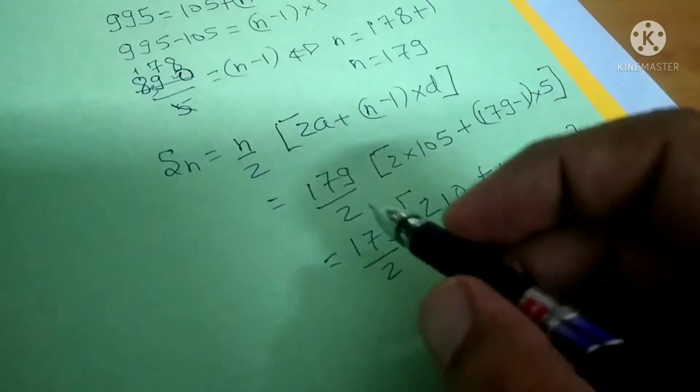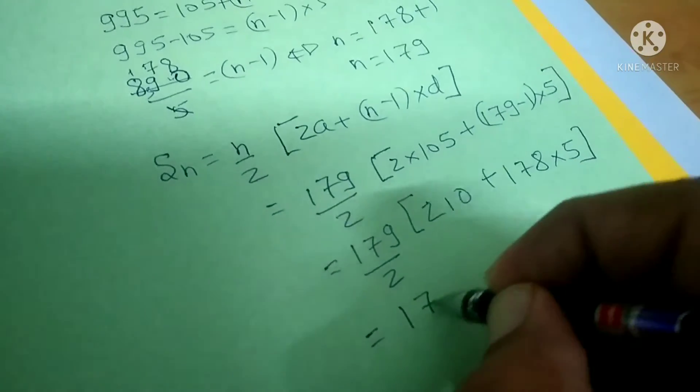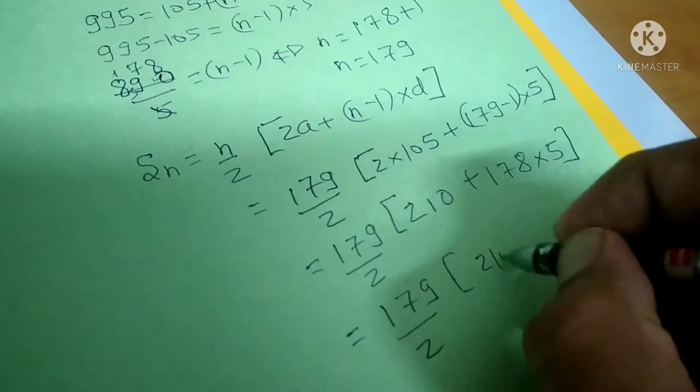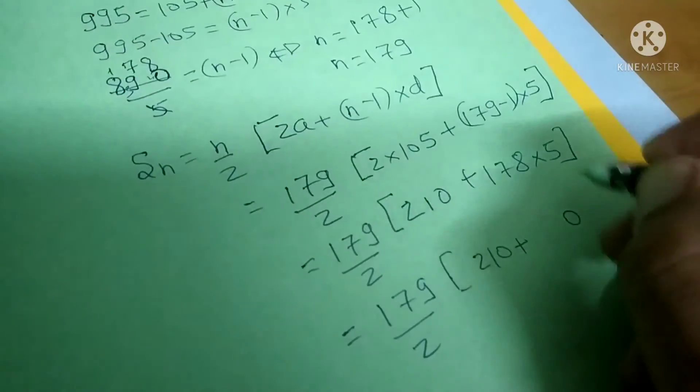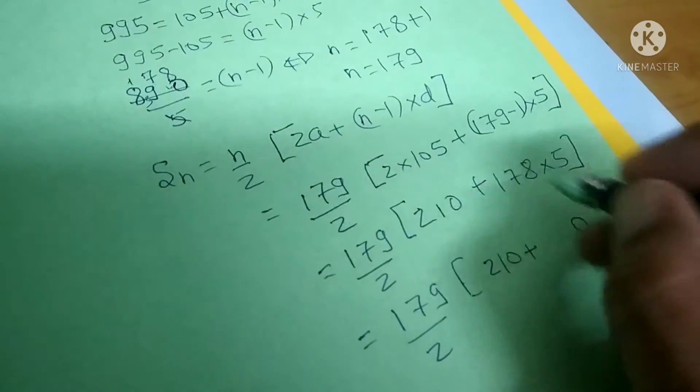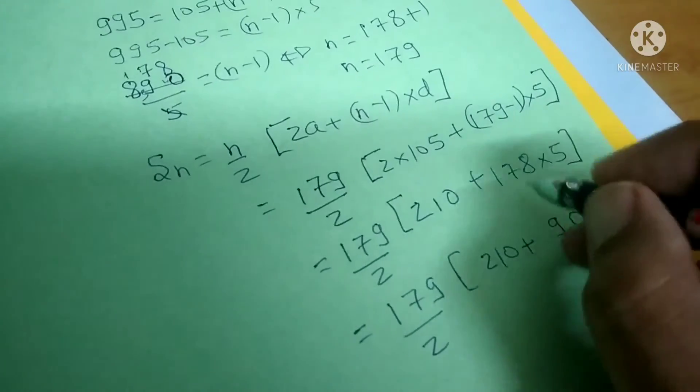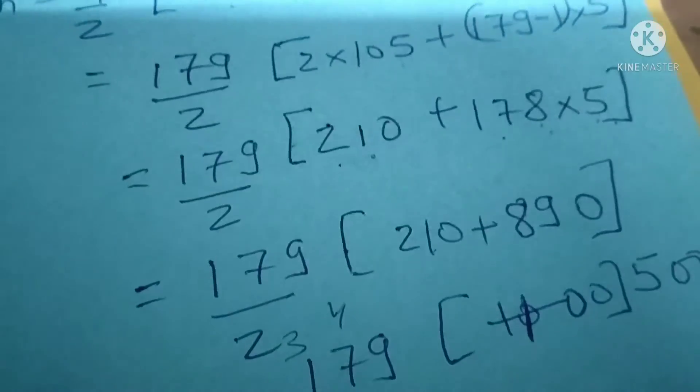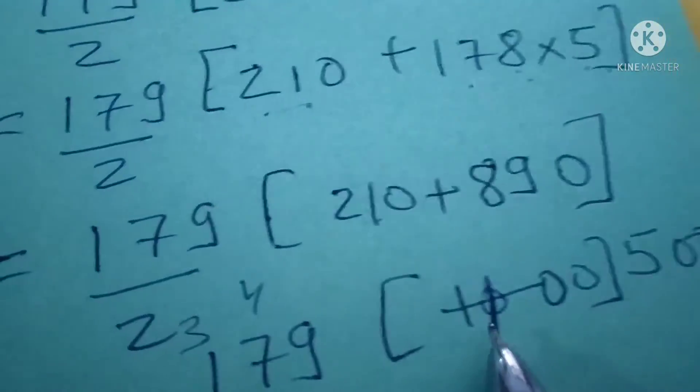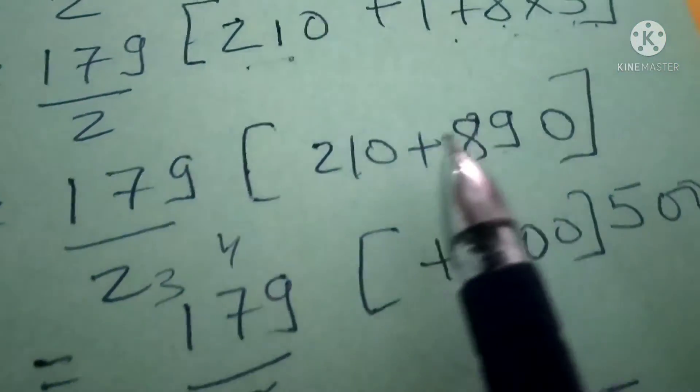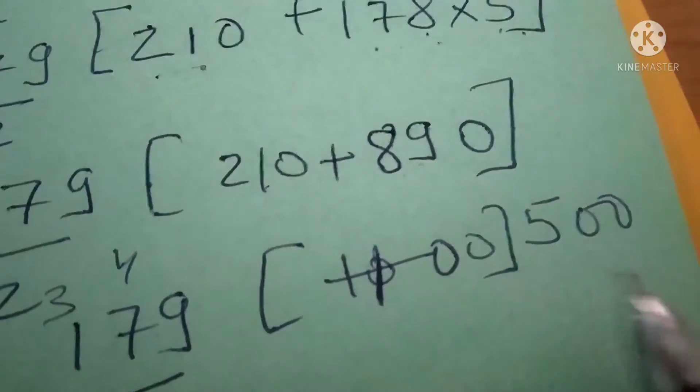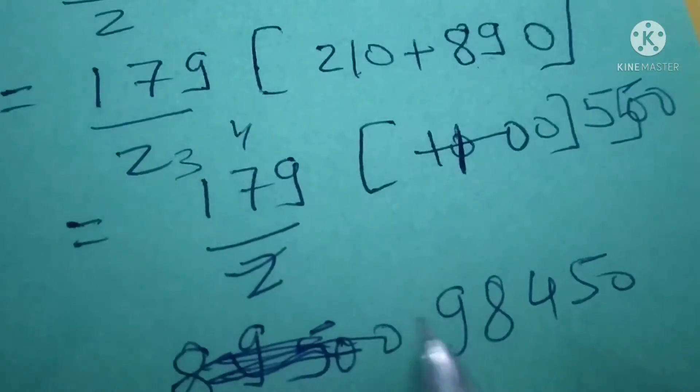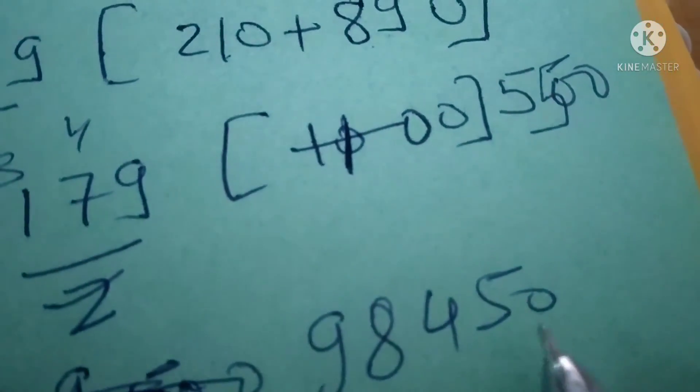This is 179 divided by 2 into 1100. When we cancel it, it will be 179 into 550. So the answer is 98,450.